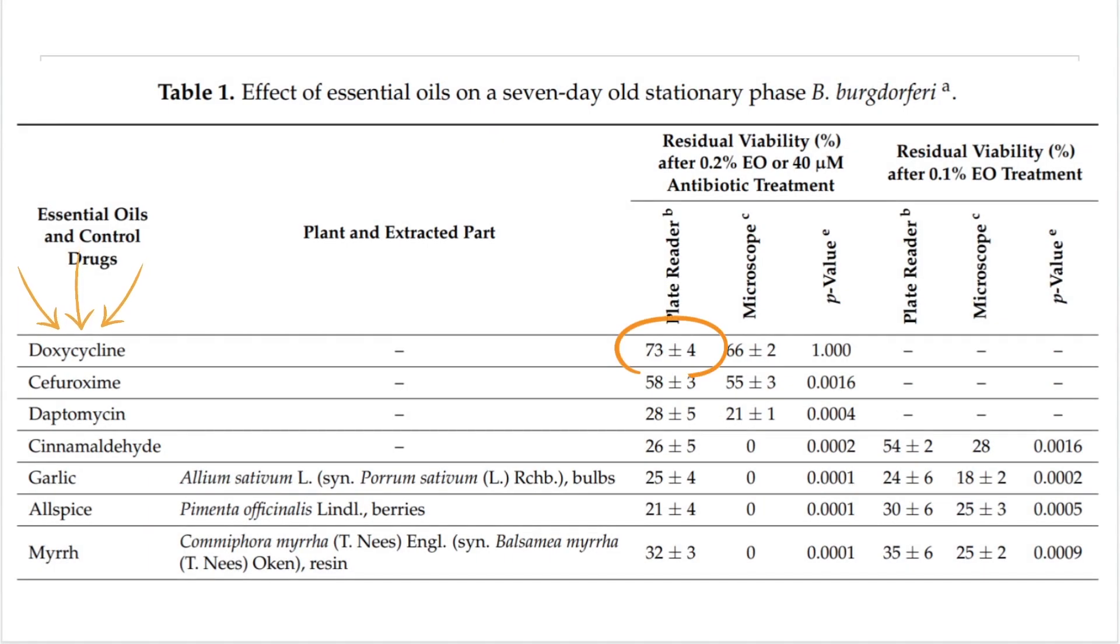If you look at the doxycycline column, 73% of the Borrelia is still there after you tried to kill it with doxycycline. So the standard antibiotic is really only killing a quarter of it. And you can look at safroxamine, you can look at dapsone. This is one reason why some doctors are playing around with dapsone, as it seems to be able to hit some of these stationary forms. However, it can be a very difficult drug for some people to tolerate.